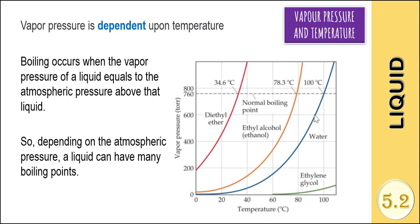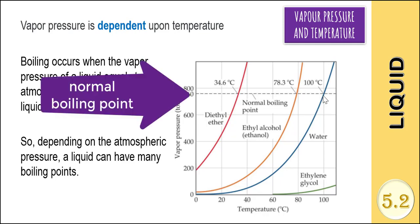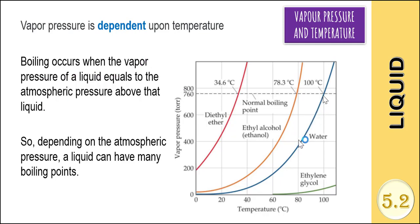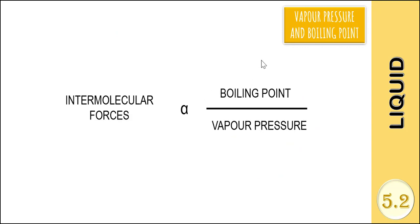The misconception that is often made is that water only boils at 100 degrees Celsius. Actually, water will boil at 100 degrees Celsius only if the atmospheric pressure is 1 atm — this is what we call the normal boiling point. At lower atmospheric pressure, the boiling point of water will become lower. These are the relationships between vapor pressure, boiling point, and intermolecular forces.